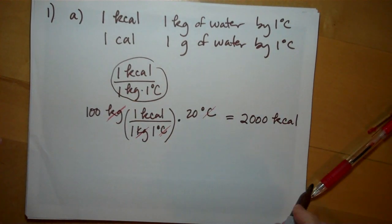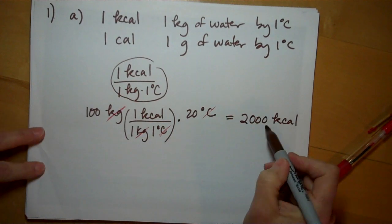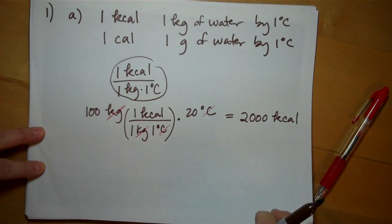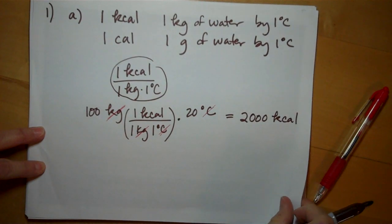Then the next question, part B, asks how many joules is this. So they want you to convert this number to joules, which is pretty straightforward using some definitions that we know.